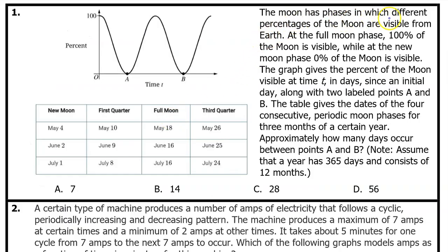Number 1. The moon has phases in which different percentages of the moon are visible from Earth. At the full moon phase, 100% of the moon is visible, while at the new moon phase, 0% of the moon is visible. The graph gives the percent of the moon visible at time t in days since an initial day, along with two labeled points A and B. The table gives the dates of the four consecutive periodic moon phases for three months of a certain year. Approximately how many days occur between points A and B? Note, assume that a year has 365 days and consists of 12 months.